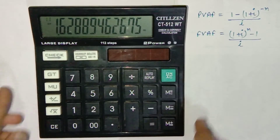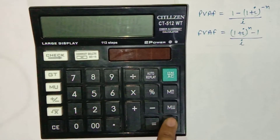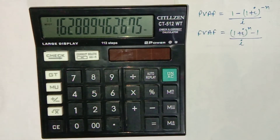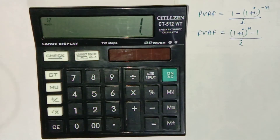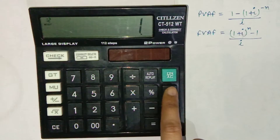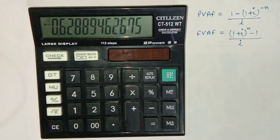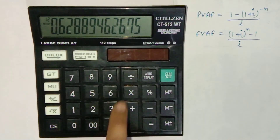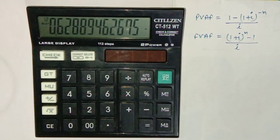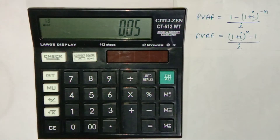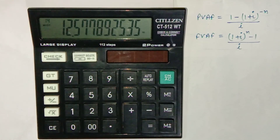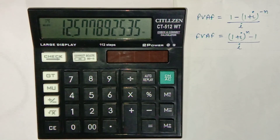This is to be saved in memory, so press M plus. Now press 1 and subtract it from the memory by pressing M minus. To extract whatever is left in the memory, press MRC. Then divide by i — since the rate of interest is 5%, divide by 0.05 — and press equals. This is how we can calculate the future value annuity factor for any rate of interest and any number of periods. Thank you so much for watching.